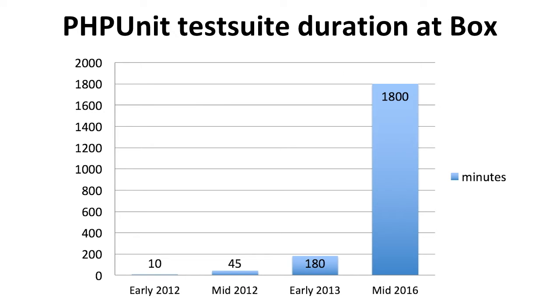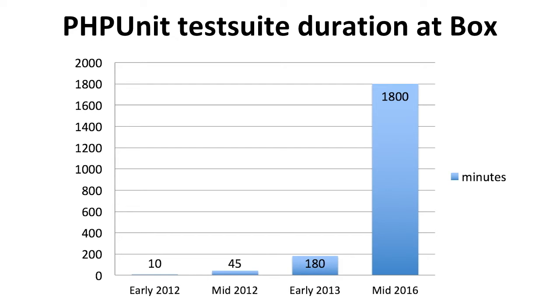We saw this happen firsthand at Box. We introduced developer-written integration and unit tests in 2012 to our primary PHP codebase. A couple of weeks in, our entire test suite took about 10 minutes to run on a single machine serially. A couple months later, we were up to 45 minutes for a single build. A year later, we were up to three hours. And today we're up to 30 hours to run our PHP test suite once on a single machine serially.